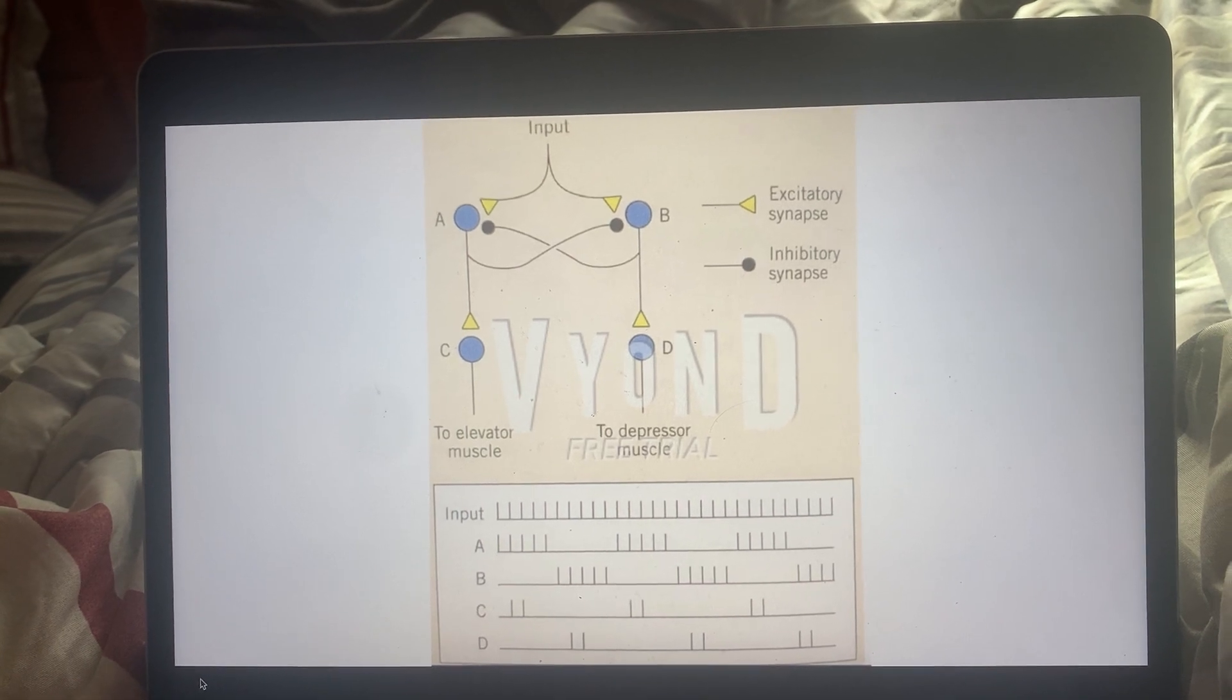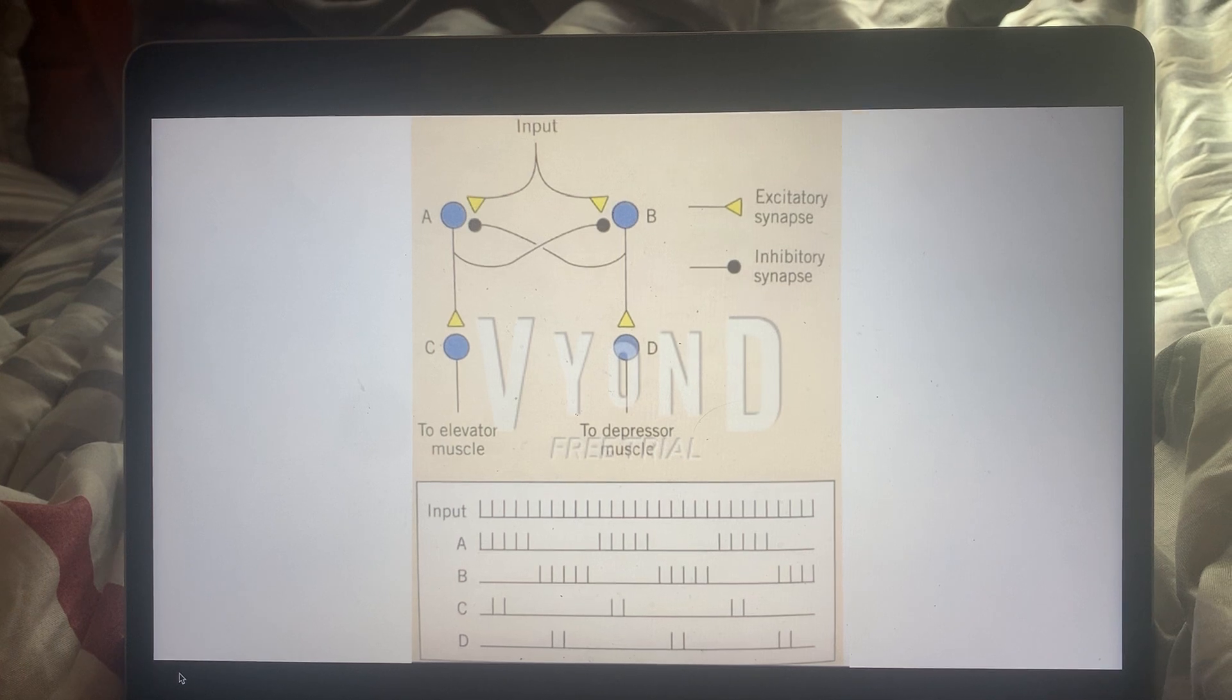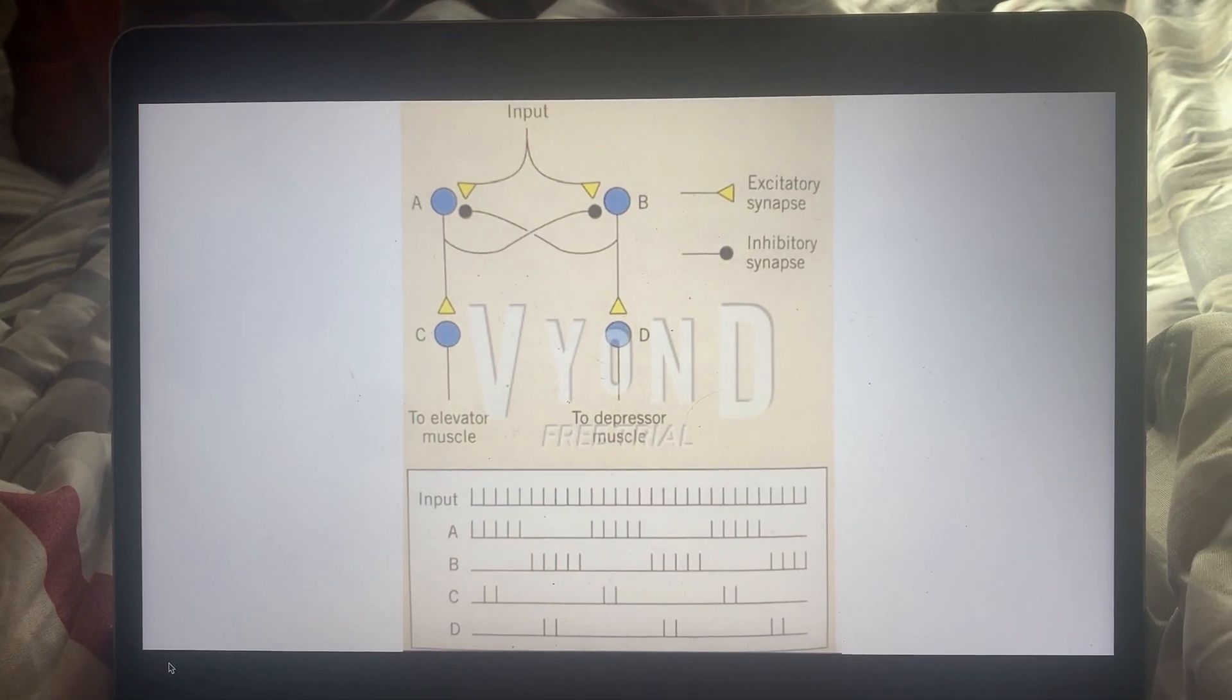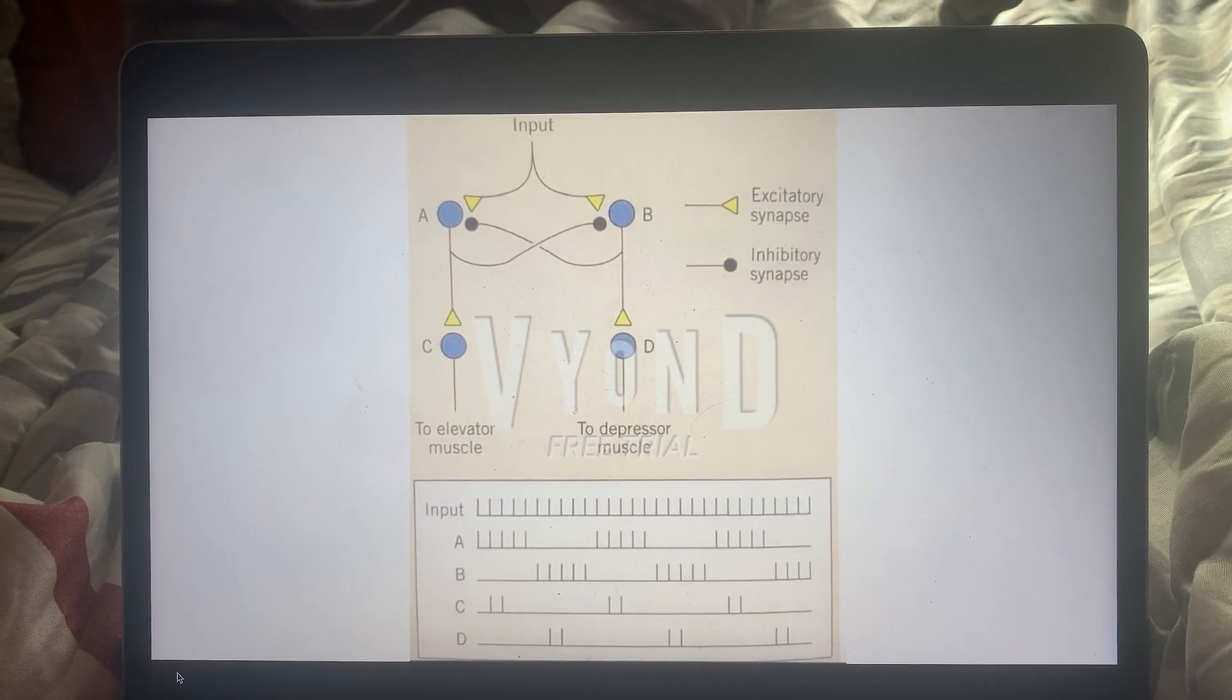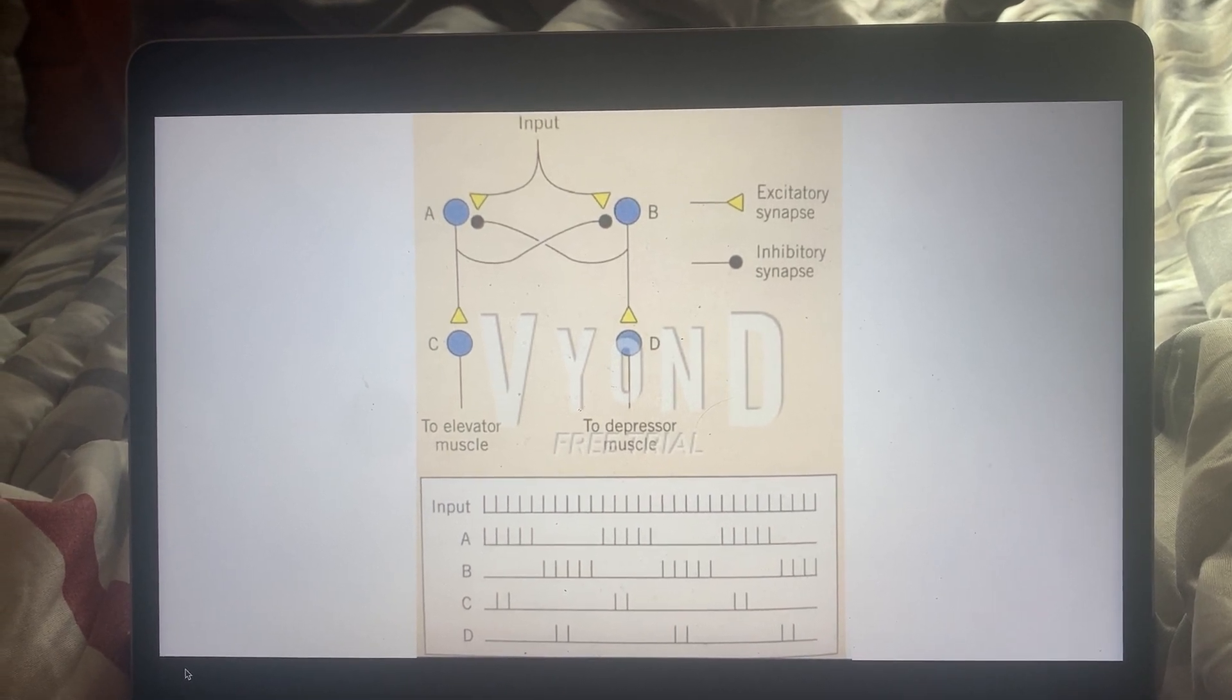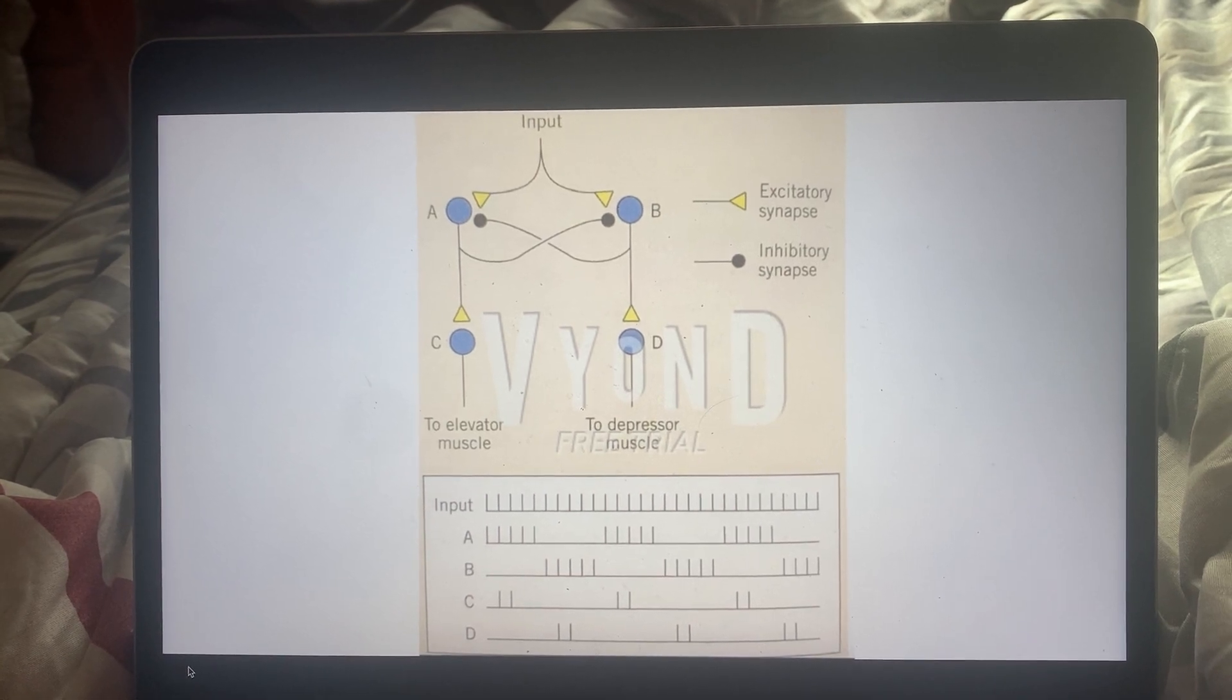In the first case, we see that A is favored. So if A is favored, then this will lead to the synapse going to C and the stimulation of the elevator muscle. This will also lead to the inhibition of B and therefore a further stimulation of C.